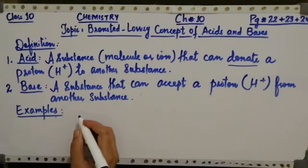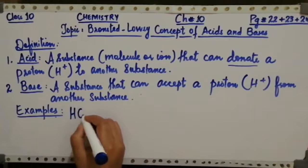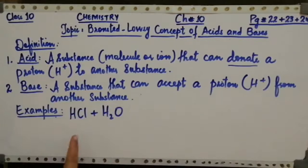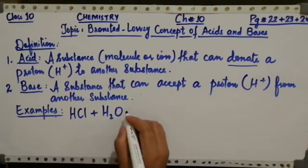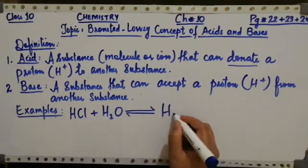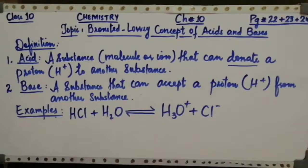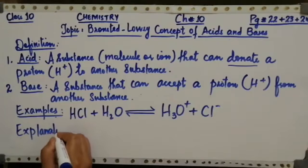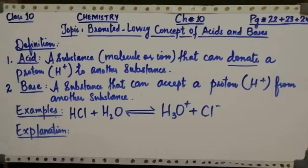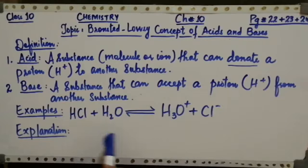Another example of the Bronsted-Lowry concept of acid and base is between hydrogen chloride and water. Hydrogen chloride acts as an acid while water is a base. In this reversible reaction, the products formed are hydronium ion plus chloride ion. You have to write down the explanation heading next.